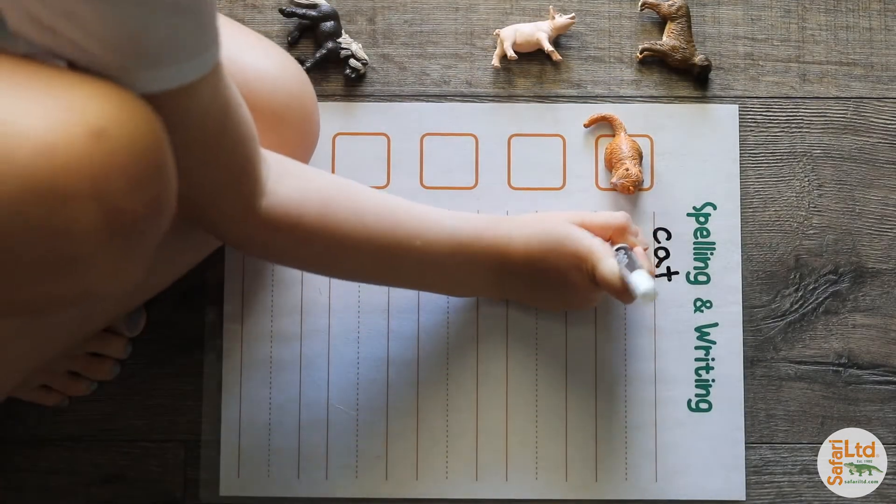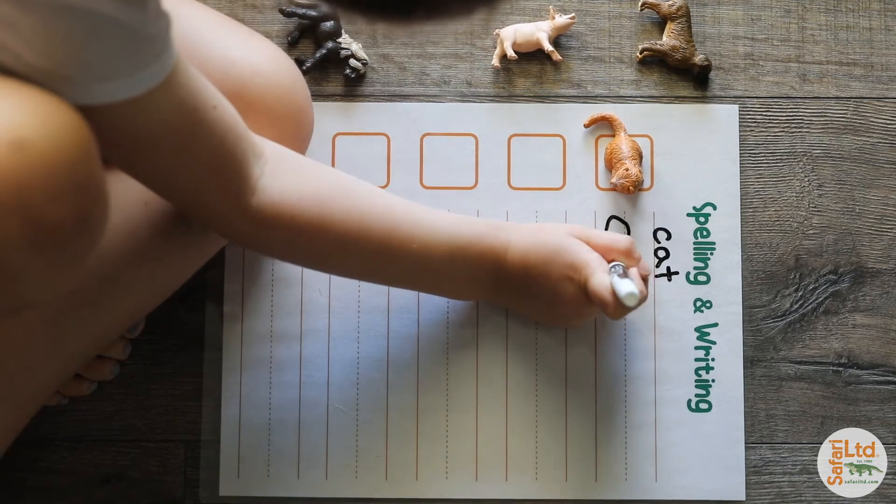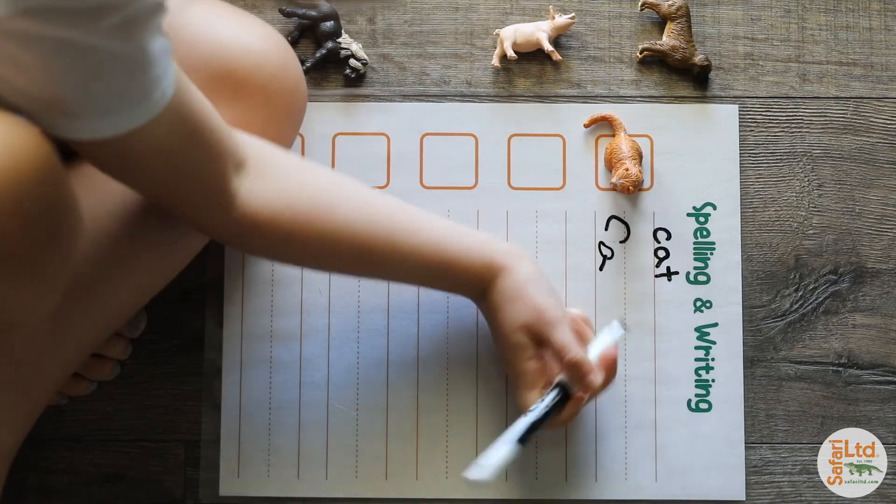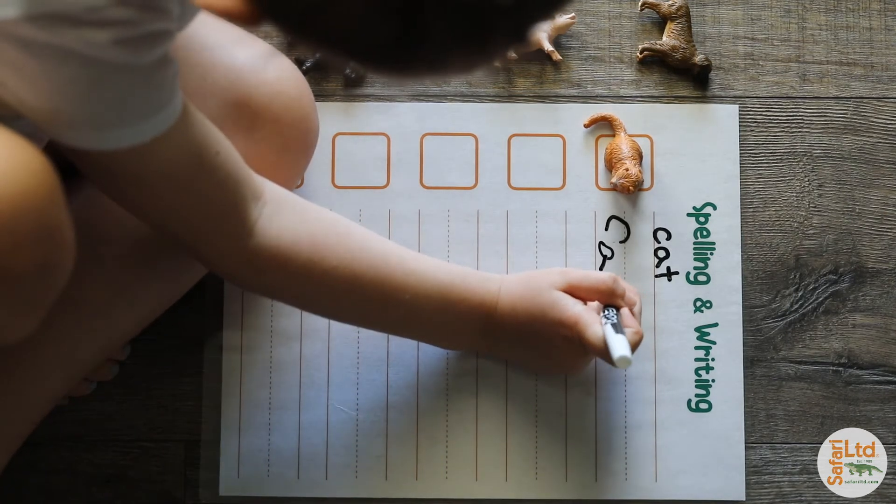The blank sheet can be used to learn themed words such as members of a family, like mom, dad, sister, brother, and cat.